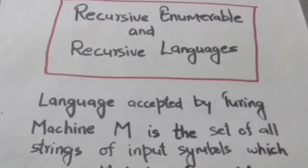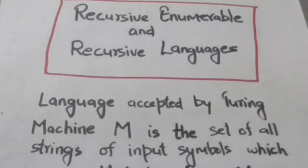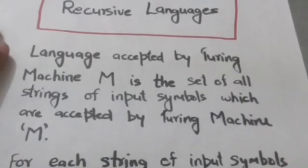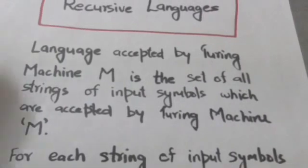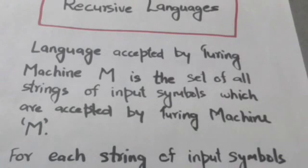Hello friends, welcome back. In this tutorial we will study about recursive enumerable and recursive languages. The language accepted by Turing machine M is the set of all strings of input symbols which are accepted by Turing machine M.